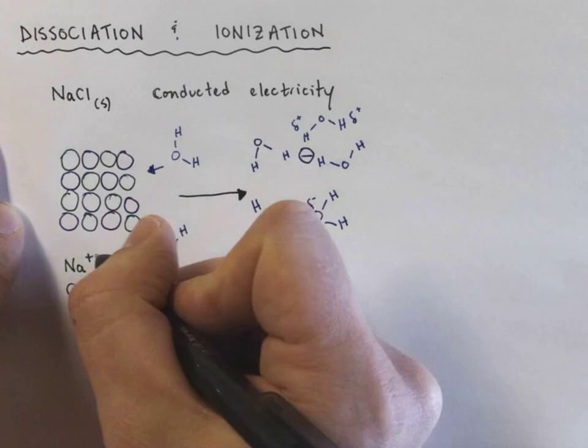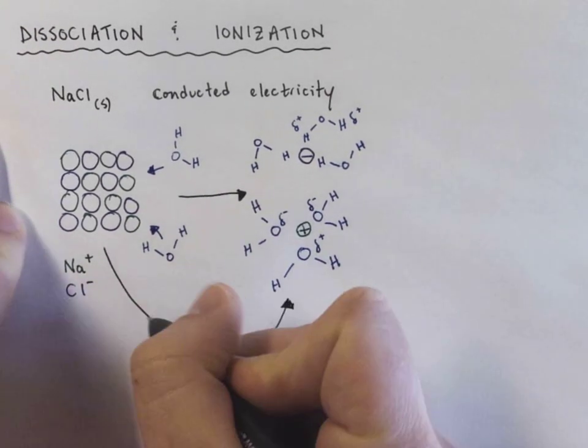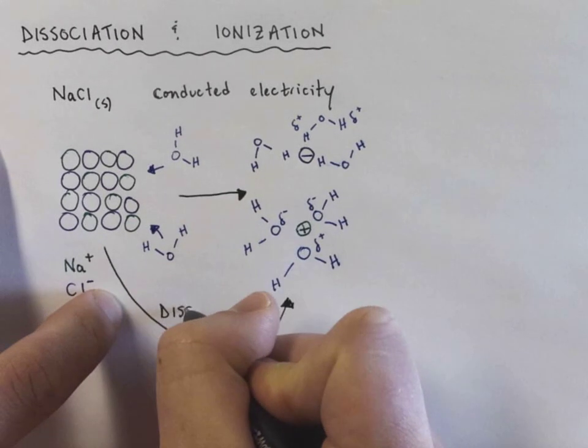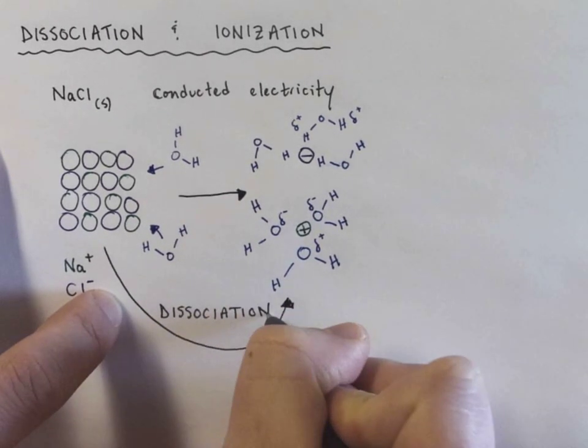So what we're really seeing here is the crystal lattice dissociates. That's why it's called dissociation, because they, it's like we're separating. These ions are separating.